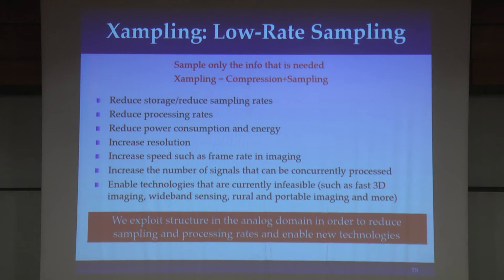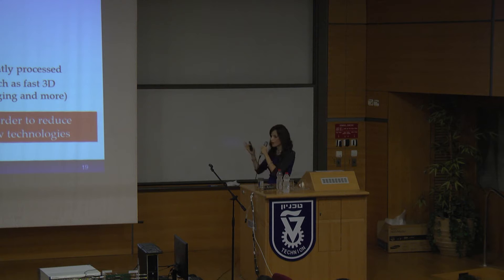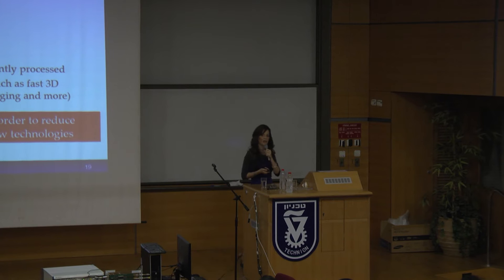For example, we can increase resolution — and the third part of the workshop devoted to optical imaging will talk a lot about increasing resolution. We can increase speed, for example in imaging, which we'll see a little about in the medical imaging session. We can increase the number of signals we could process. And finally, maybe most interesting is that we can enable technologies that today are limited by these high rates — for example, 3D ultrasound imaging, wireless imaging (a demo we'll see later today), and cognitive radio (another demo we'll see today).